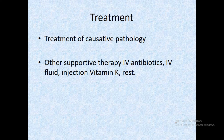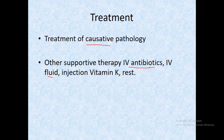Treatment of jaundice depends upon the cause — whether hemolytic, hepatic, or obstructive. Supportive therapy includes intravenous antibiotics, intravenous fluids, vitamin K injection, and rest. This lecture covers the physiological aspects of jaundice and bilirubin metabolism; the clinical aspects should be studied in the subject of medicine.